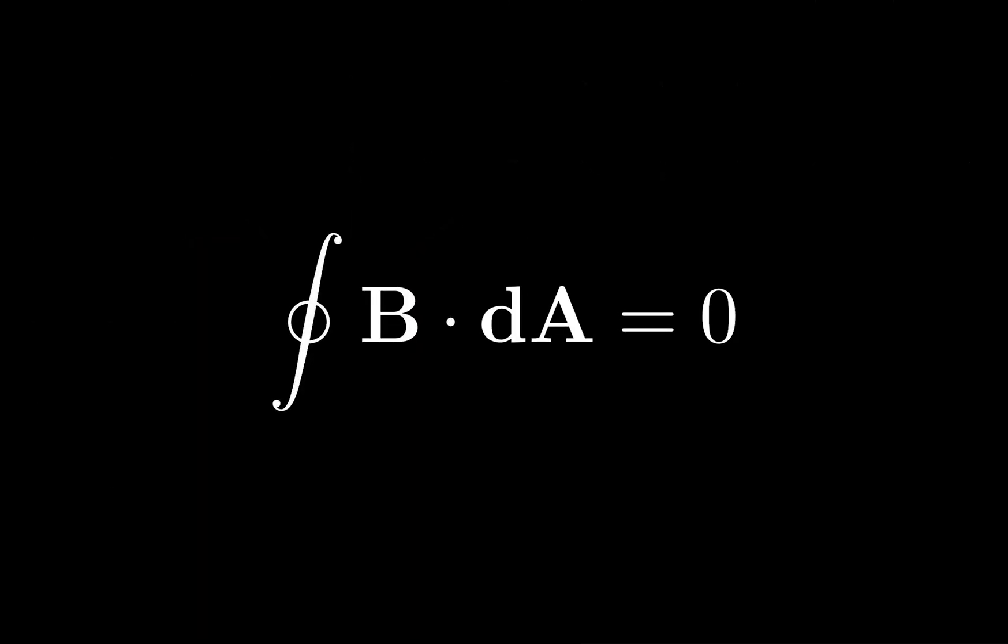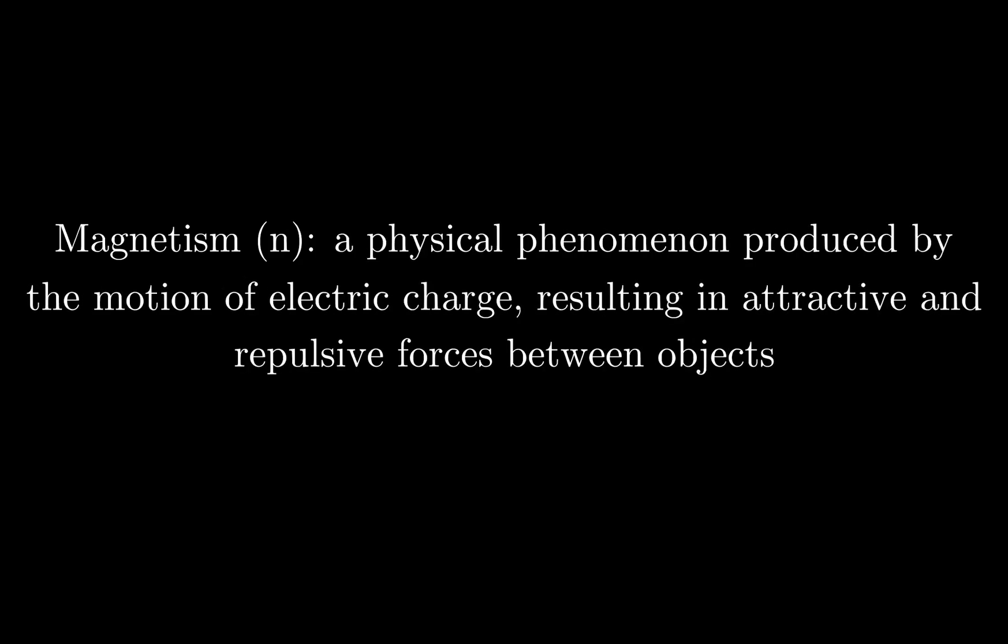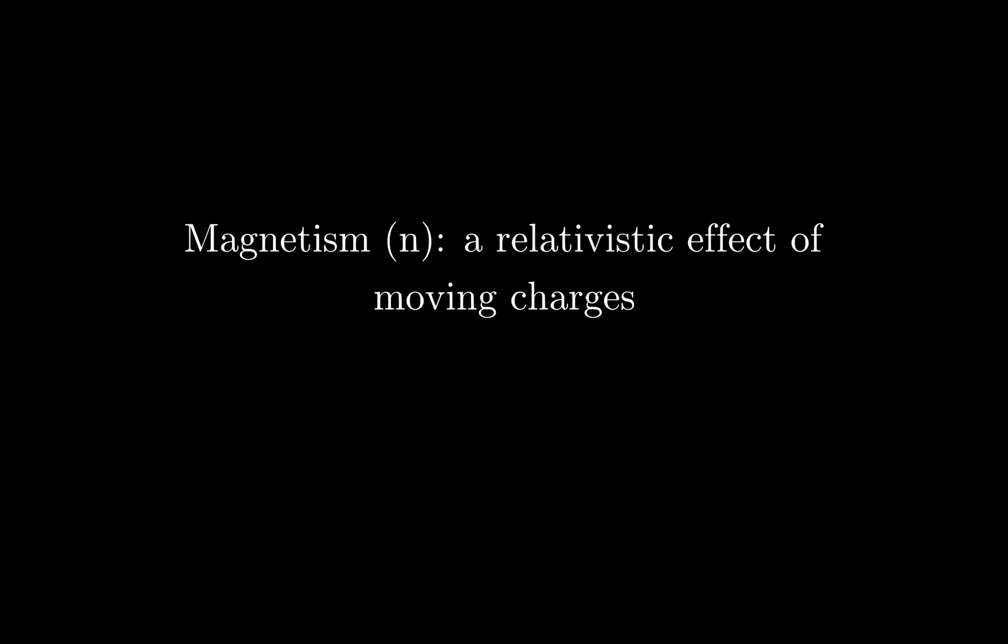However, before we get into Gauss's law for magnetism, I think our discussion will be much more meaningful if we first establish a working definition of what magnetism is. If you look at the definition of magnetism in a dictionary, you'll probably get something like this: Magnetism is a physical phenomenon produced by the motion of electric charge, resulting in attractive and repulsive forces between objects. If you ask a physics teacher for their definition of magnetism, they'll probably define magnetism as a relativistic effect of moving charges.